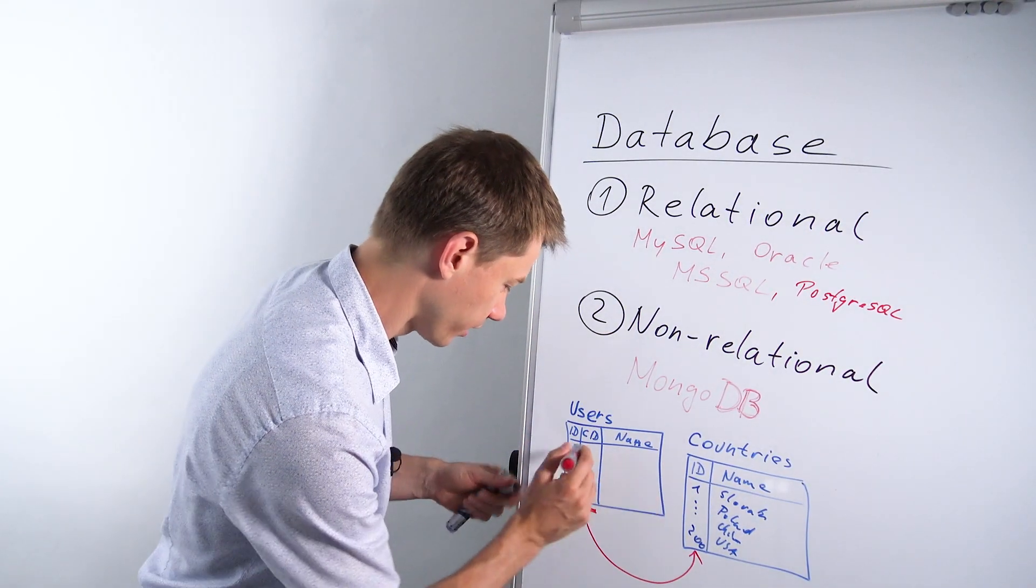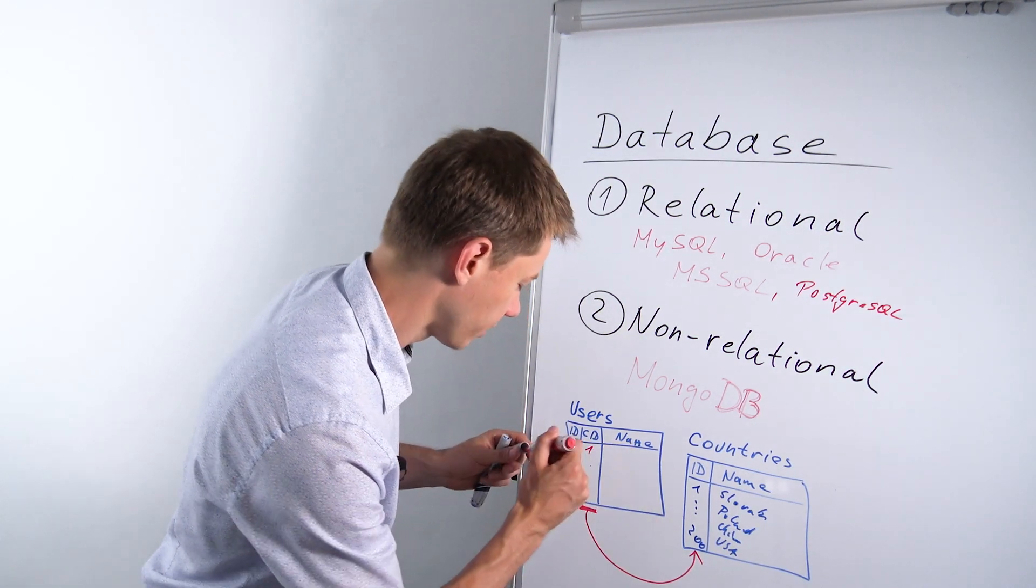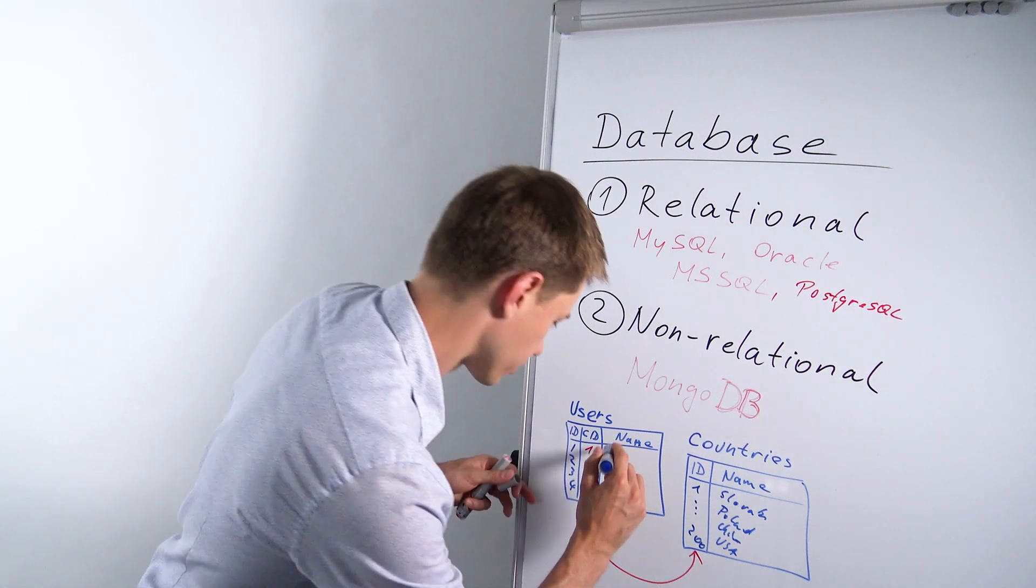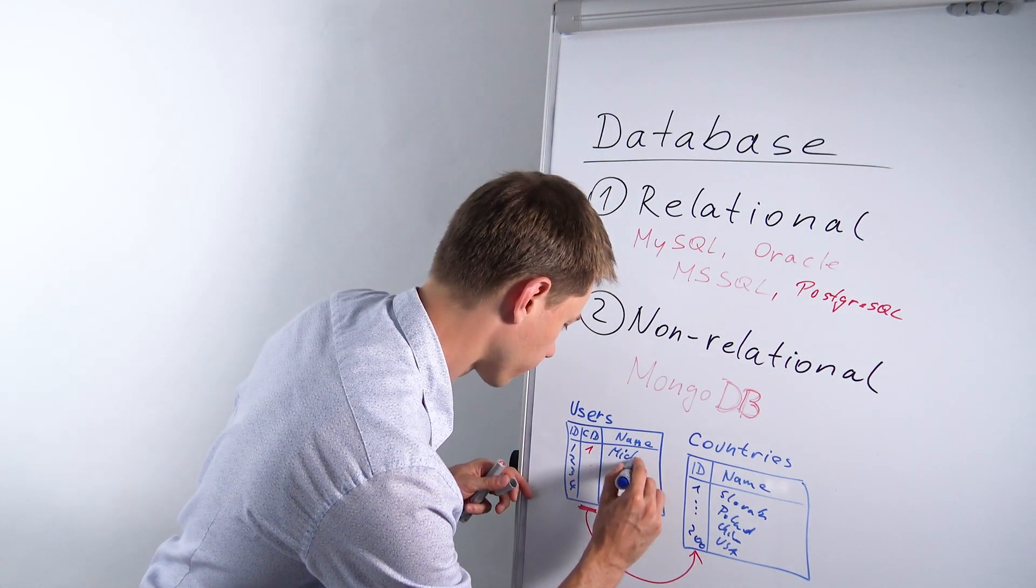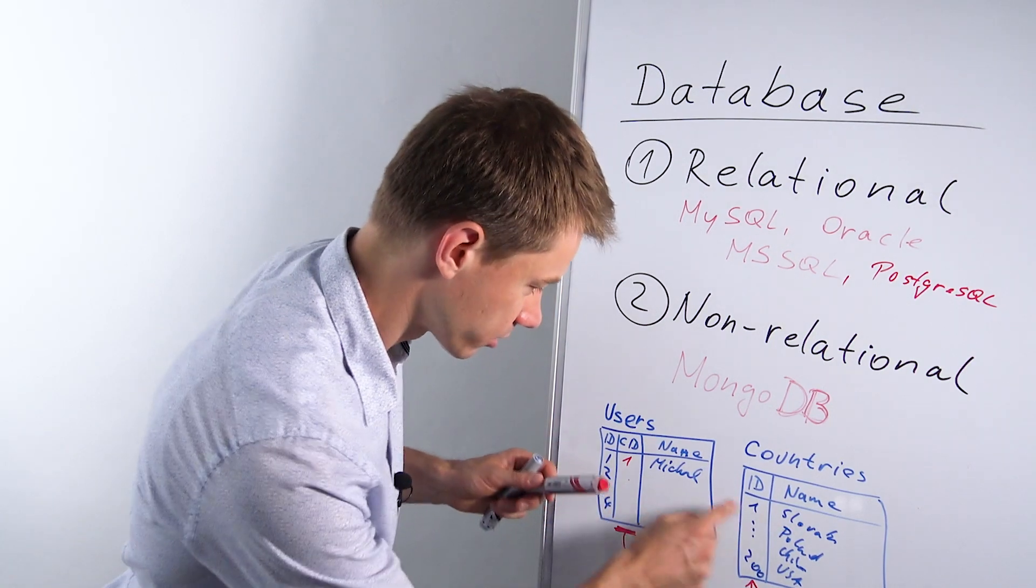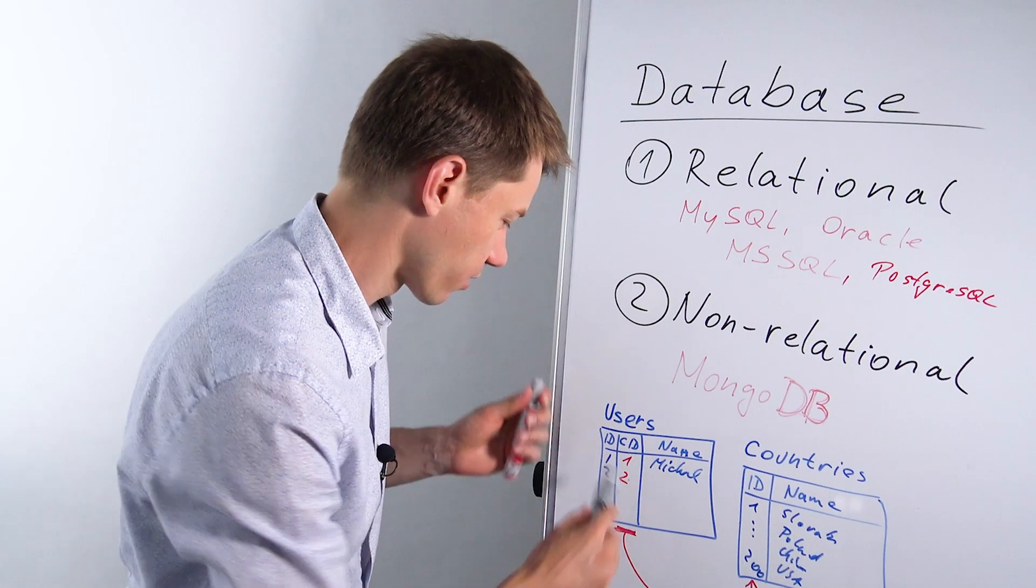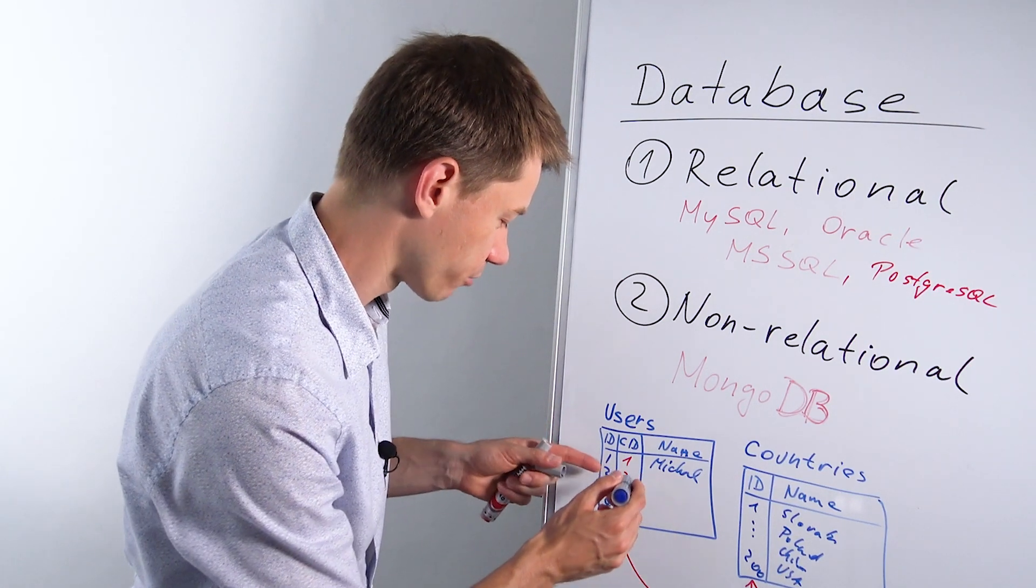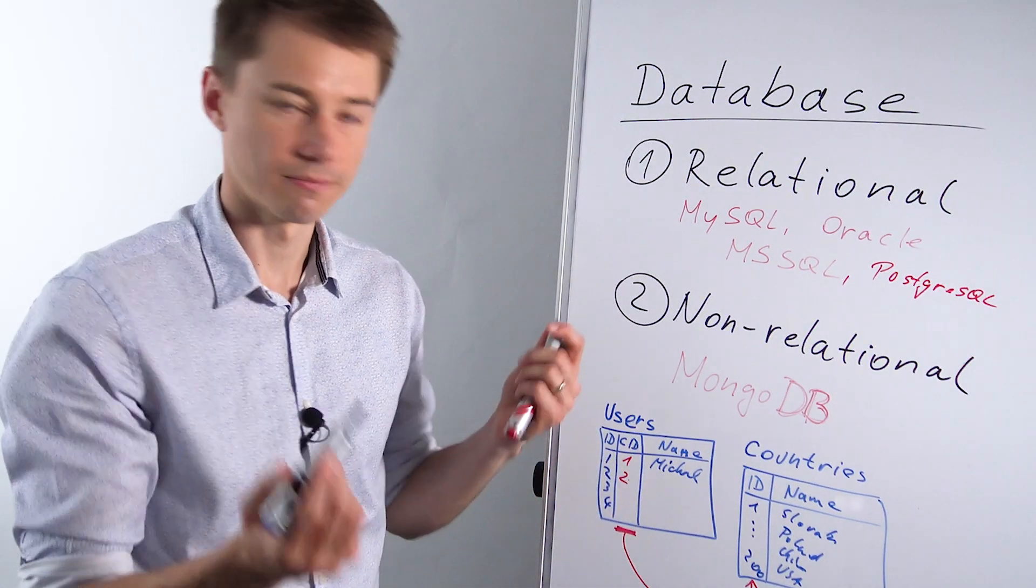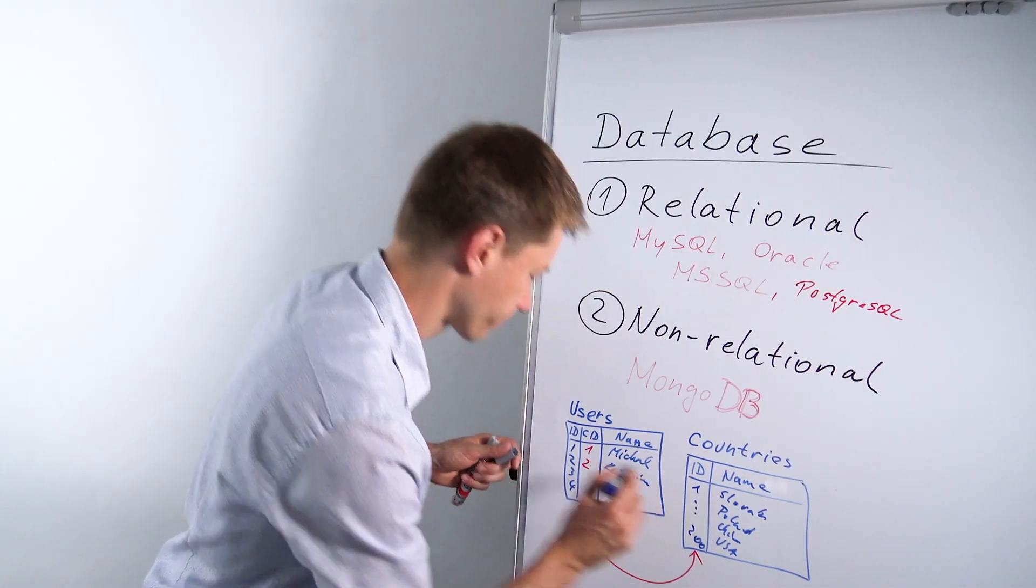So this column refers to this column here. So if user one is from Slovakia then here would also be number one. And the name of the user would be say it's me so it's Michael. And user number two would be from Poland. So number two is Poland. So here the user number two would be Katarina for example.